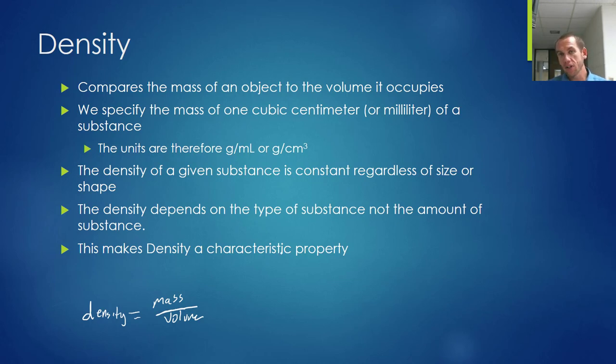And so we specify the mass of one cubic centimeter or milliliter of a substance, and so that gives us units of grams per milliliter, which is equivalent to a gram per cubic centimeter, since a cubic centimeter and a milliliter measure the same thing.